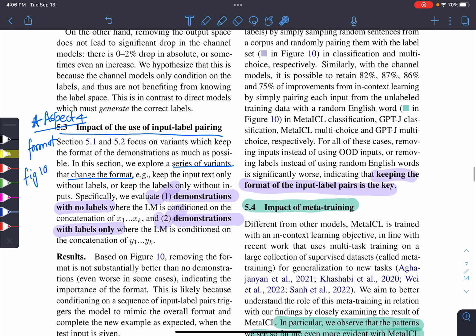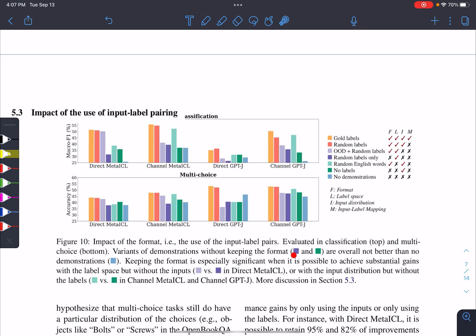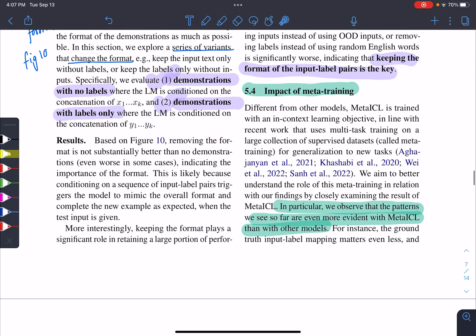The fourth aspect is the format of the sequence. The experiment is one with the pair, input and the label, then only label, and then only input. If you see that, the dark purple is only labels, dark green is only input. And if you see in both the cases, their performance is very less. So having the key pair, the input label pairs is the key.